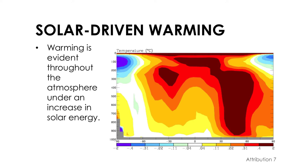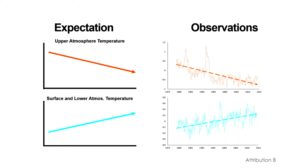By contrast, warming due to some natural factor, like more sunlight reaching the Earth, would warm the surface and the upper atmosphere as well. The cooling of the upper atmosphere while the surface warms is a fingerprint of increased greenhouse warming, and it's exactly what we can see happening now.